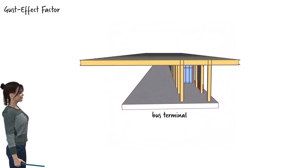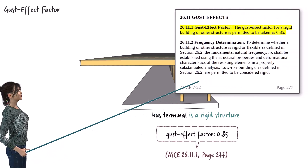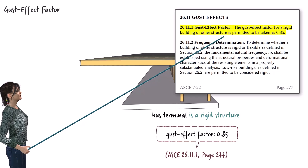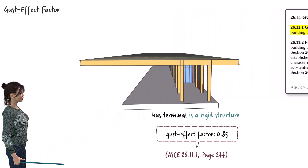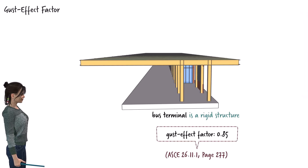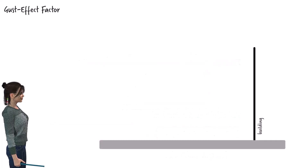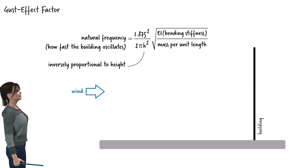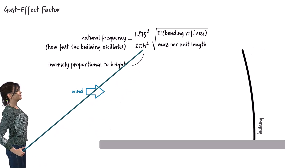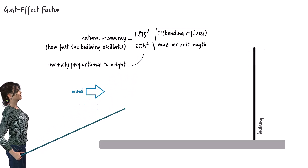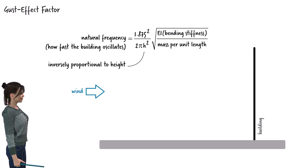Given its height and the configuration of its steel skeleton, our bus terminal is considered a rigid structure. According to ASCE 7-22, the gust effect factor for rigid buildings is 0.85, as noted in Section 26.11.1. That raises an interesting question: if gusts amplify the effect of wind, why is the gust effect factor less than 1 for our structure? Consider a tall, flexible building — under dynamic loading, it vibrates slowly. In general, the natural frequency of a structure is inversely proportional to its height: the taller the structure, the lower its natural frequency and the slower its vibration.